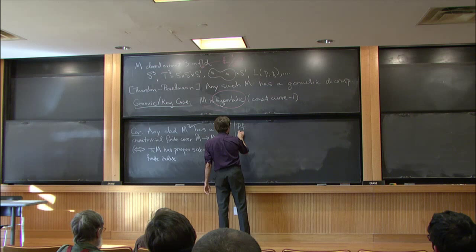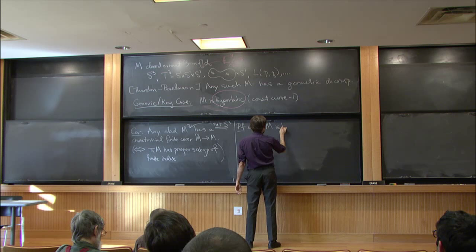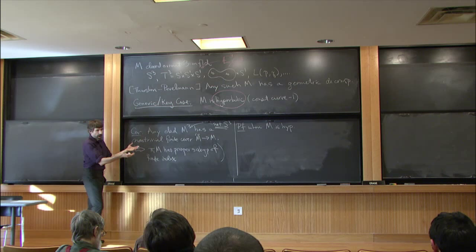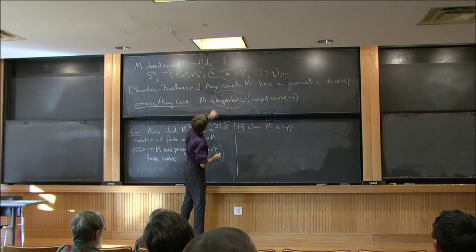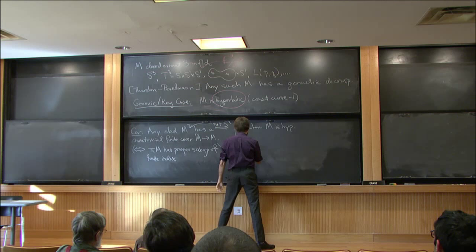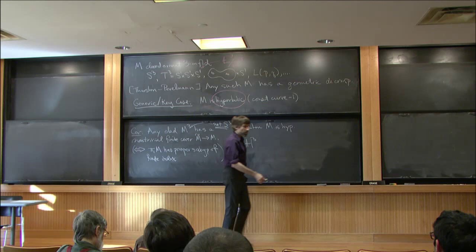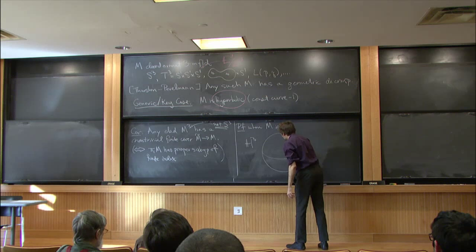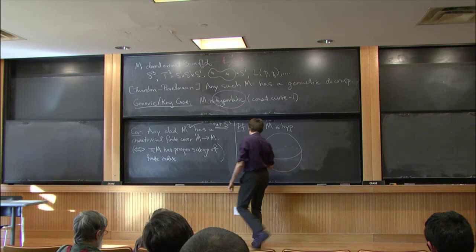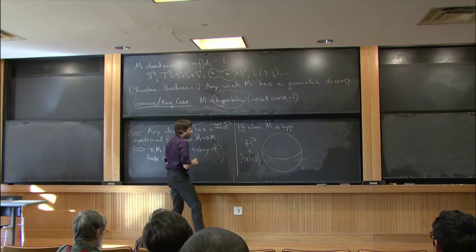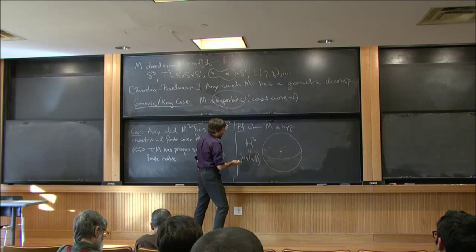Let me give you a sketch of the proof when M is hyperbolic. You can think of a hyperbolic metric as a Riemannian metric of constant curvature minus 1, but you can also think of it — as we did for the three-dimensional torus — as the quotient of hyperbolic 3-space by the action of the fundamental group, by the action of some discrete group. Hyperbolic 3-space is just the open unit ball in ℝ³ together with a Riemannian metric.